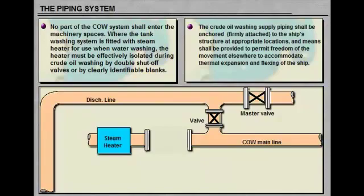The crude oil washing supply piping shall be anchored to the ship's structure at appropriate locations and means shall be provided to permit freedom of the movement elsewhere to accommodate thermal expansion and flexing of the ship.